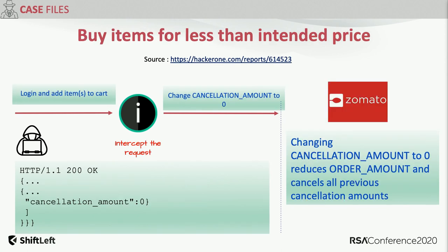Another interesting case happened with Zomato — similar to DoorDash, a food delivery service. This individual added items to cart and observed various parameters. There was one little parameter called 'cancellation amount' which didn't quite make sense, but they enumerated it. When they switched it to zero, it cancelled or reduced the order amount, so they fulfilled the order at no cost and also cancelled the majority of their order history.